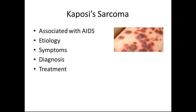Kaposi's sarcomas are associated with AIDS and HIV infections. The etiology is not fully understood. Symptoms include malignant vascular skin tumors and bluish-red cutaneous patches that grow under the skin; involvement of the nose and mouth can make it painful and difficult to eat. Diagnosis is by examination and biopsy, and treatment includes liquid nitrogen, radiation, and chemotherapy.